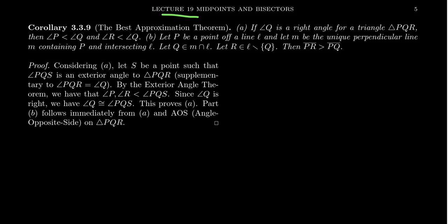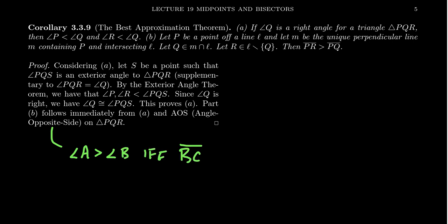In this video, we're going to conclude lecture 19 about midpoints and bisectors, and we're going to prove the so-called best approximation theorem. In the previous video of lecture 19, we proved the AOS relation — the angle opposite side relation — which tells us that in a triangle ABC, angle A is larger than angle B if and only if side BC is greater than side AC. We're going to use the AOS relation to prove a corollary of it, known as the best approximation theorem.